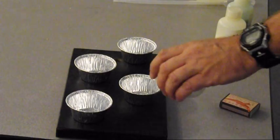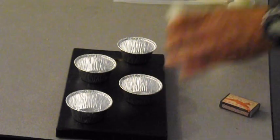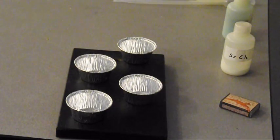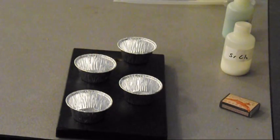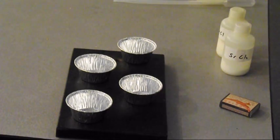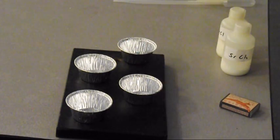And what I'm going to do is I'm just going to add chemicals to three of them. Why do I have four if I'm going to leave one of them empty? That would be your control. So what happens when there is nothing present?